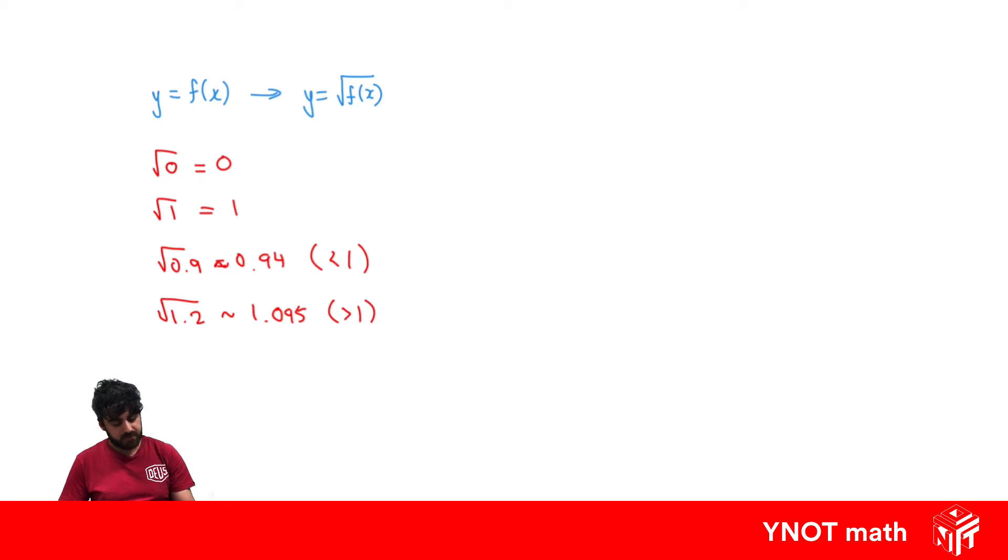For example, root 9 obviously ends up being 3, a smaller number than 9. But the tricky part is when the number is between 0 and 1, it ends up being bigger than the original number. Hopefully that's going to help us when we sketch some of these.